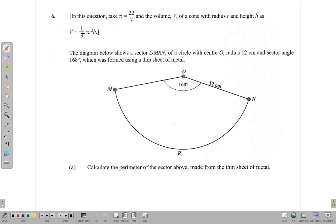is given as V = (1/3)πr²h. So we have a formula here. The diagram below shows a sector OMRN of a circle with center O, radius 12 cm, and sector angle 168°. We're asked to calculate the perimeter of the sector.